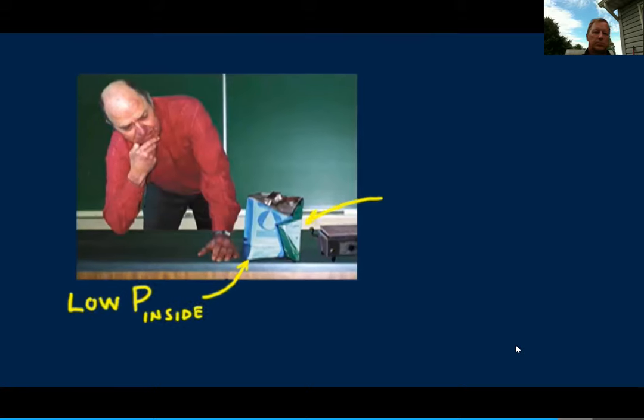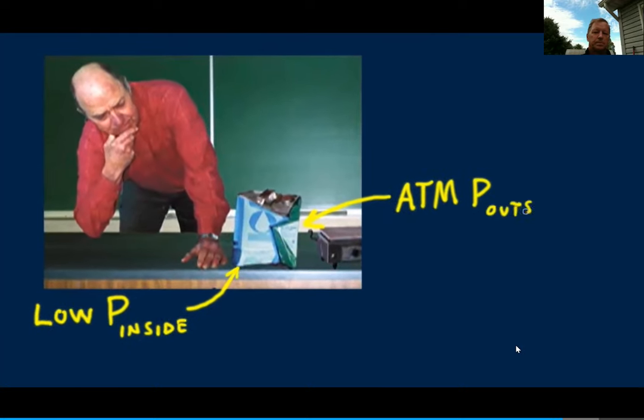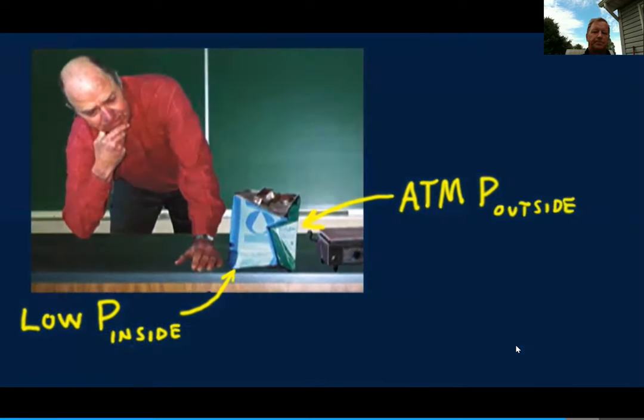Dan Johnson shows what happens to a gallon can when a partial vacuum occurs inside the can. Low pressure inside, not quite a vacuum, can't balance the outside atmospheric pressure. So the relatively greater atmospheric pressure on the outside crushes the can.